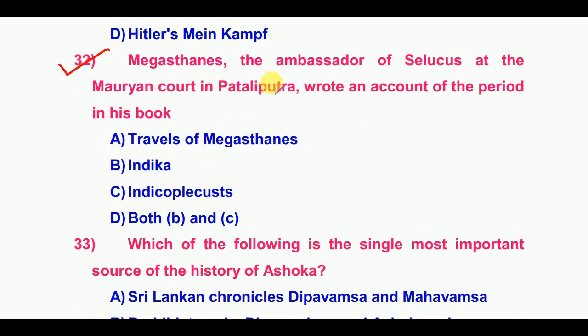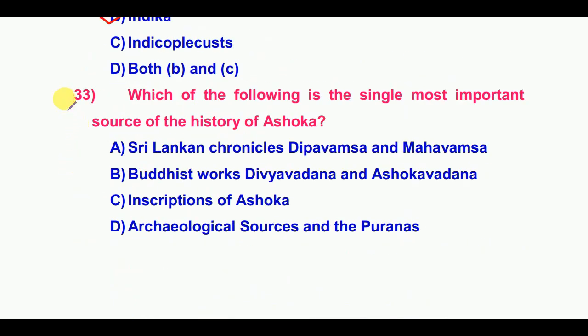Megasthenes, the ambassador of Seleucus at the Mauryan court in Pataliputra, wrote an account of the period in his book Indica. Which of the following is the single most important source of the history of Ashoka? The answer is the Inscriptions of Ashoka.